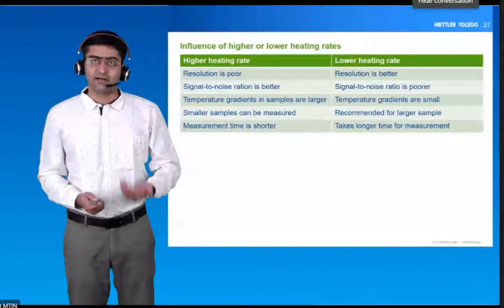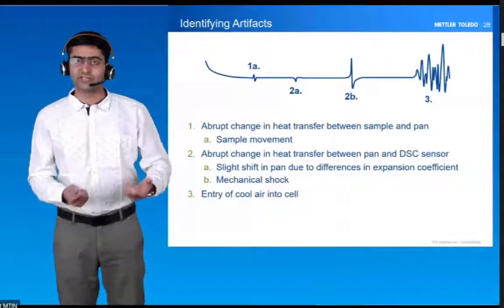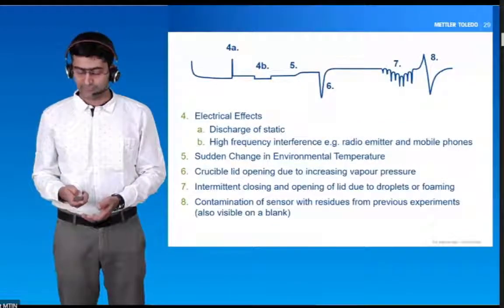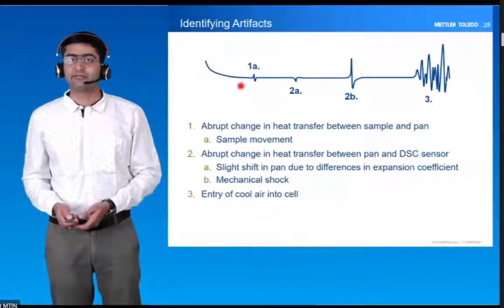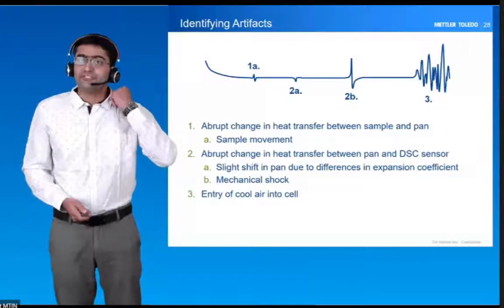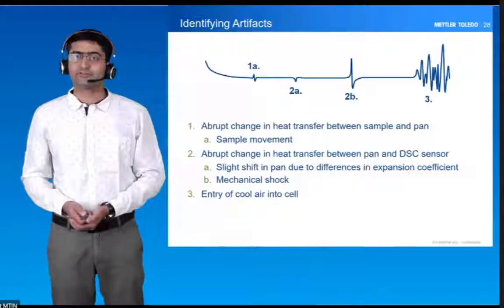Now, there are some artifacts possible in the DSC, and we have to understand many of these artifacts — what is the cause behind them. The first one is because of the movement of the sample: if a sample moves, you will have this kind of artifact. Then, if there is some abrupt change in the heat transfer between the pan and the DSC, for example a slight shift in the pan due to a difference in expansion coefficient.